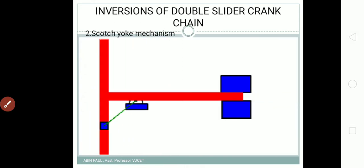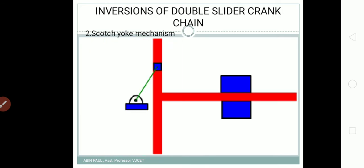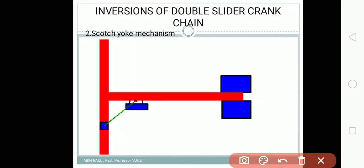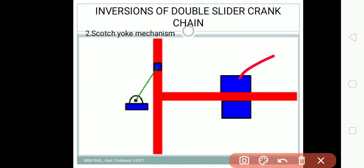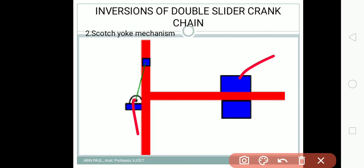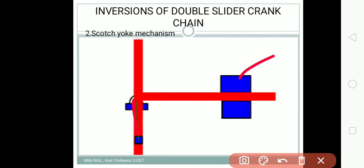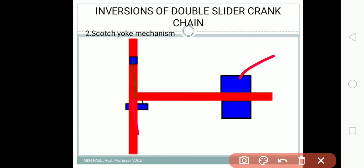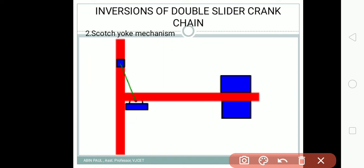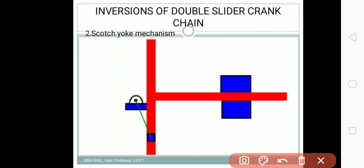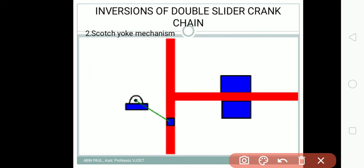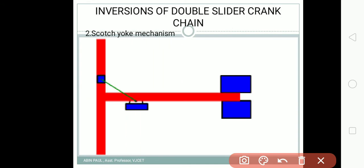The second inversion is the Scotch yoke mechanism. The purpose of the Scotch yoke mechanism is to convert the rotary motion of the crank to reciprocating or oscillating motion. Here the blue colored elements act as the fixed links. We have two sliders: the red colored element is one slider, and another sliding element which slides along the red colored element is the second slider. We also have a connecting rod colored green that connects the slider and the fixed link.